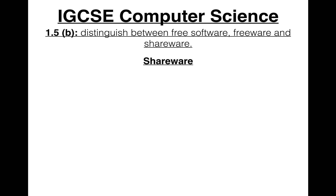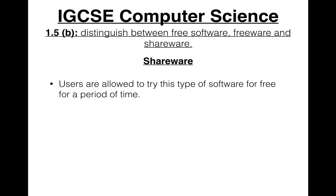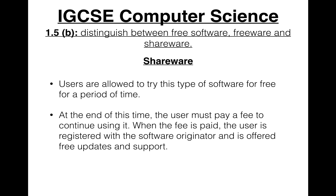Shareware is kind of like free software but works a bit differently. Users are allowed to try this type of software for free, but only for a period of time. At the end of this time, the user must pay a fee to continue using it — similar to a 30-day trial, after which you must buy the software.